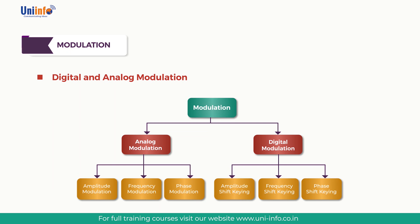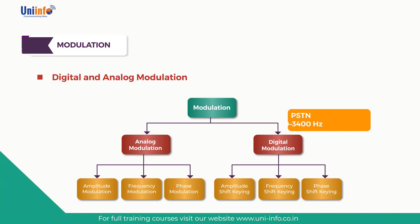The aim of digital modulation is to transfer a digital bitstream over an analog bandpass channel, for example over the public switched telephone network (PSTN) where a bandpass filter limits the frequency range to 300 to 3400 Hz, or over a limited radio frequency band. Our next topic is analog modulation.